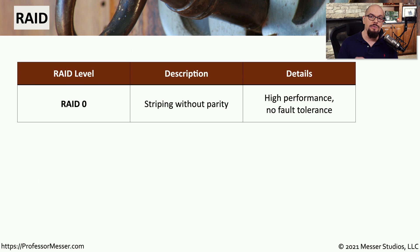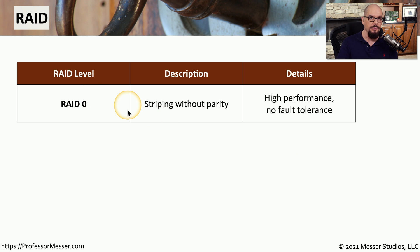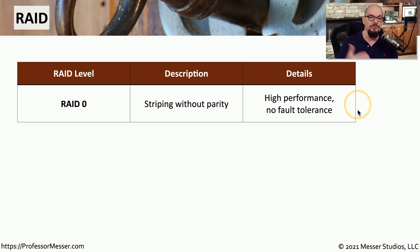If we review some of these RAID levels from our A+ studies, we can start with RAID 0. RAID 0 is no redundancy whatsoever. It's usually called striping without parity, where you have very good performance to be able to read and write to that array. But if you lose any drive in that RAID 0 array, you've also lost the data, and there's no redundancy available.